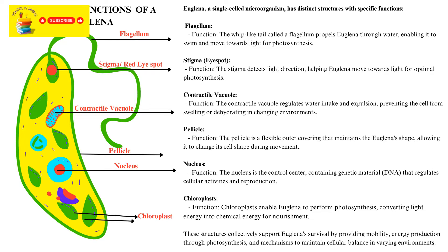Euglena, a single-celled microorganism, has distinct structures with specific functions. Flagellum: the whip-like tail called a flagellum propels Euglena through water, enabling it to swim and move towards light for photosynthesis. Stigma (eye spot): the stigma detects light direction, helping Euglena move towards light for optimal photosynthesis.